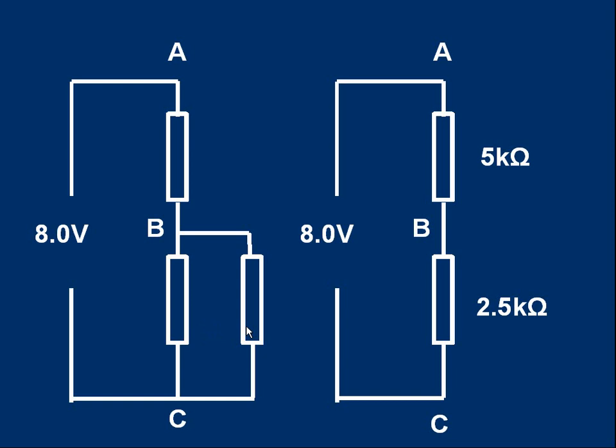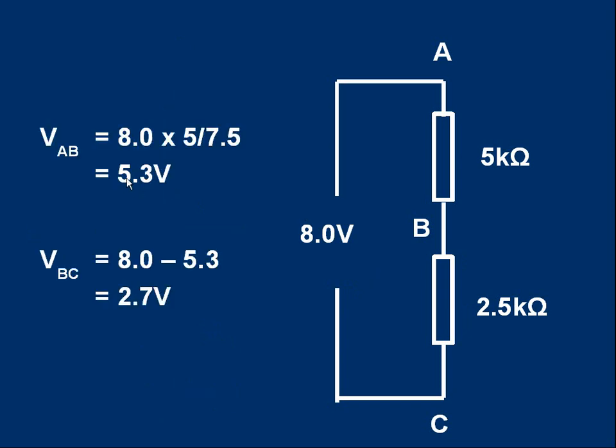So, two 5s in parallel, they are the same as a 2.5 kiloohm resistor. What we've actually got is a 5 and a 2.5 kiloohm resistor in series. The rest is easy. VAB, well, it's eight times, and the fraction will be 5 over 7.5, because the total is 7.5 kiloohms. It's okay to work in kiloohms throughout. The units would cancel. That's 5.3 volts. VBC, well, we can take 8 minus 5.3 to give 2.7 volts.